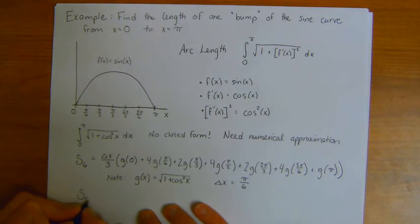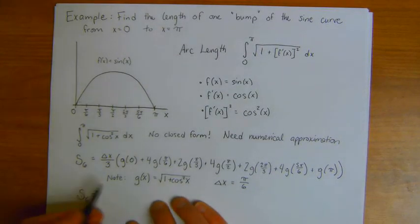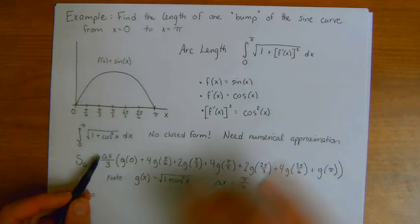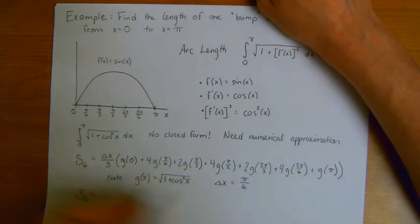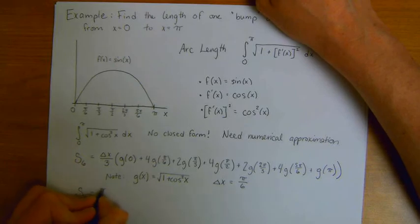So that means that S6, to spare you the details of seeing all of this, I actually did this on my calculator ahead of time. Pi over 6 divided by 3 is actually pi over 18.